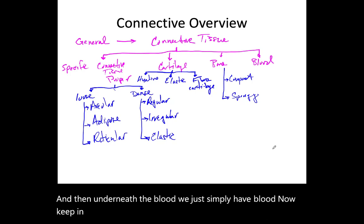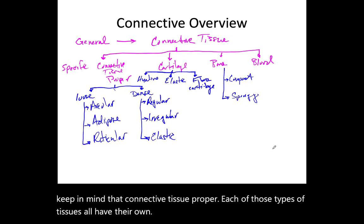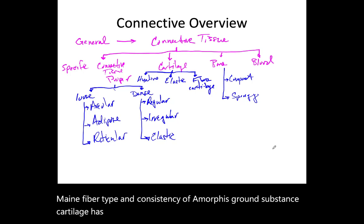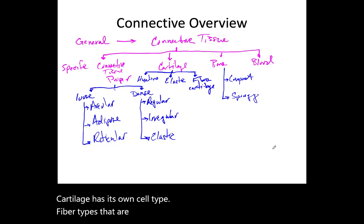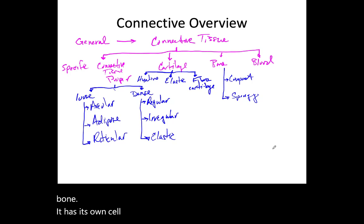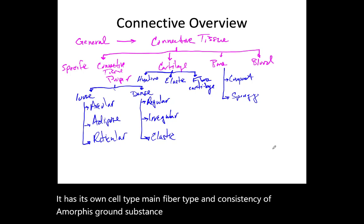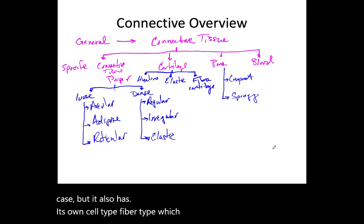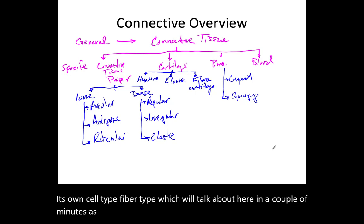Keep in mind that each of these types — connective tissue proper, cartilage, bone, and blood — has its own main cell type, main fiber type, and consistency of amorphous ground substance. Cartilage has its own cell type, fiber types, and variation in ground substance. Bone has its own cell type, fiber type, and ground substance. Blood is a unique case but also has its own cell type, fiber type, and ground substance consistency.